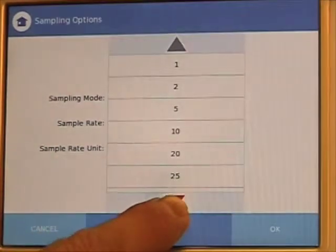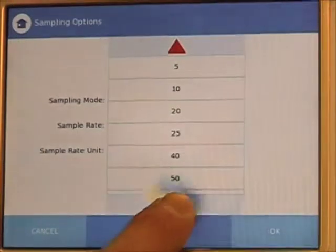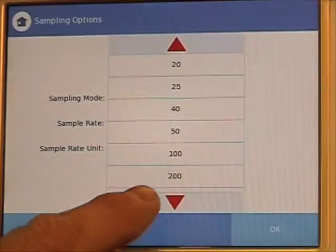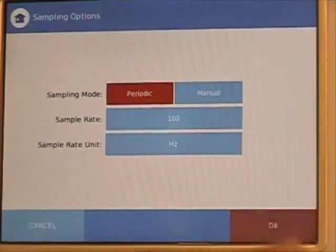And then adjust the sampling rate by pressing the down arrow until the 100 shows. Press 100, and then press OK.